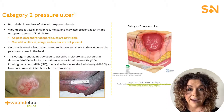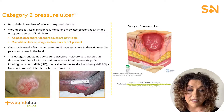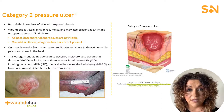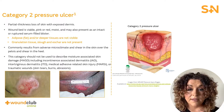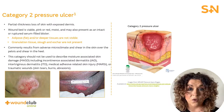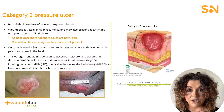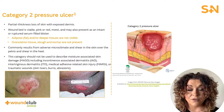Category 2 pressure ulcers are classified as having partial thickness loss of skin where the dermis is exposed. The wound bed is exposed and may appear as red or pink, and are often following the breakdown or rupture of a blister. It's important to note that there would be no deeper tissue involvement at this stage and that the wound bed will be free of slough or eschar. Sometimes, stage 2 pressure ulcers can be confused with moisture associated skin damage. Therefore, understanding the cause, as we mentioned before, is important.